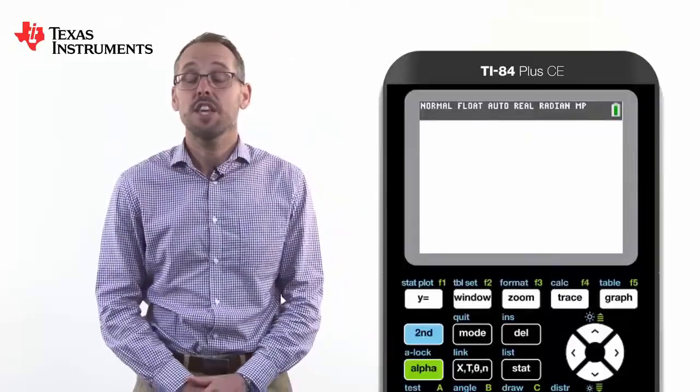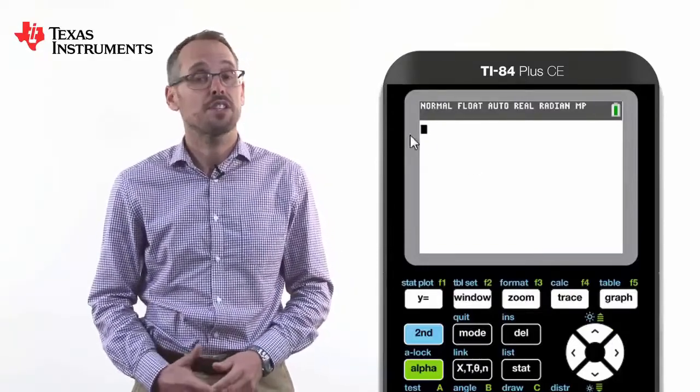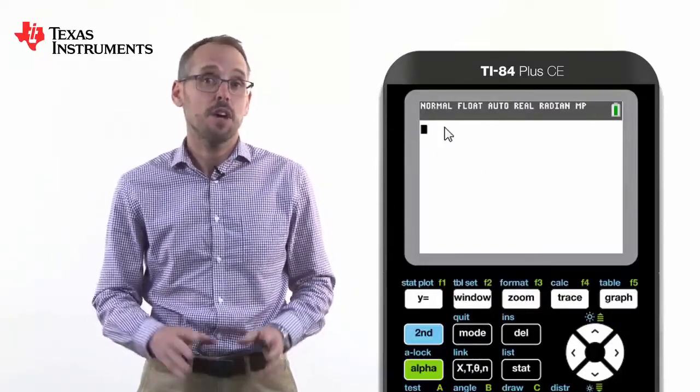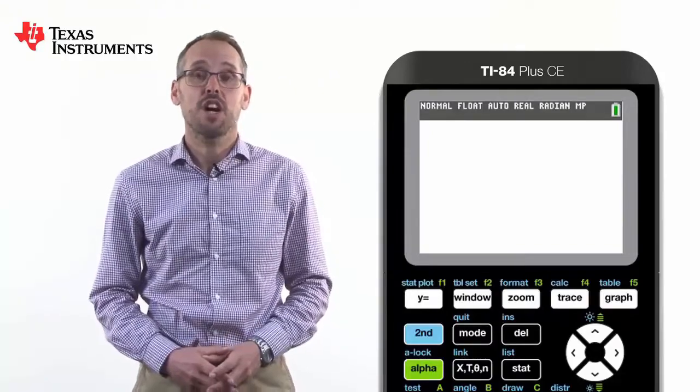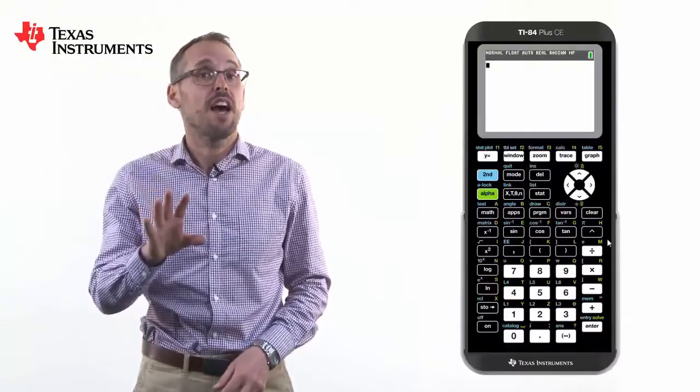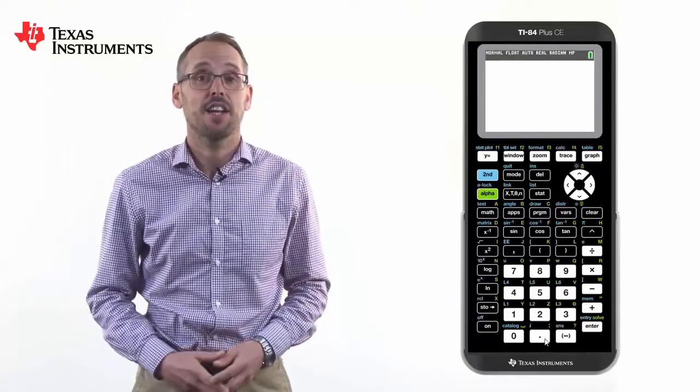You can see the cursor in the top left hand corner of the home screen where we can type our calculations. Don't be overawed by all the buttons. To start with, we're just going to look at the white buttons and do basic calculations just like any other calculator.